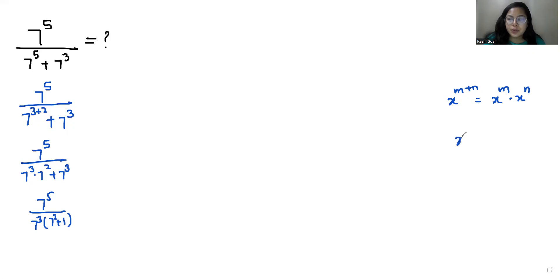Another exponent rule: x power m by x power n we can write as x power m minus n. So 7 power 5 minus 3 is 7 power 2. 7 square is 49, plus 1, so it is 49 by 50.